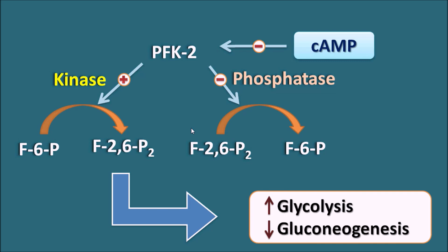In this way, cyclic AMP can affect four metabolic pathways: glycogenesis, glycogenolysis, glycolysis, and gluconeogenesis. It increases glucose levels by increasing glycogen breakdown (glycogenolysis) as well as increased formation of glucose by gluconeogenesis. The processes of glycogenesis and glycolysis are inhibited by cyclic AMP. All these effects together lead to increased glucose levels in the body.